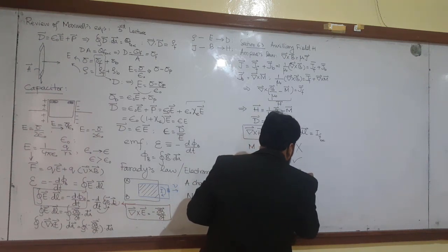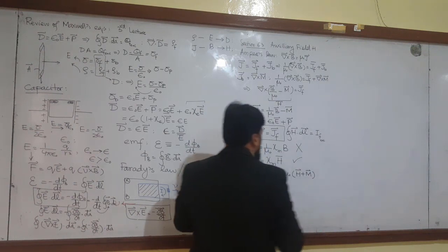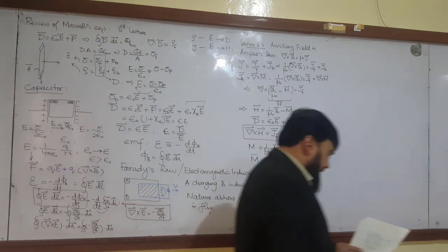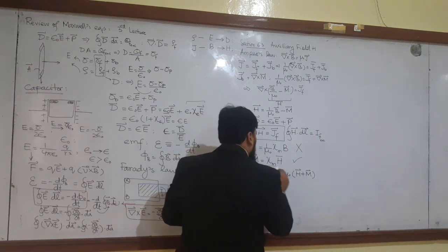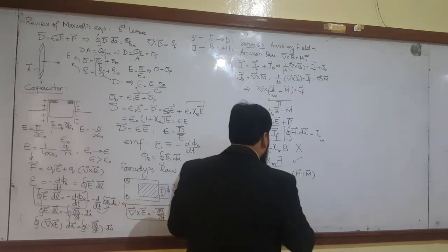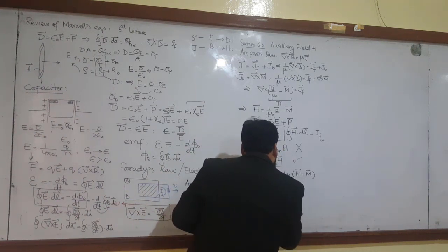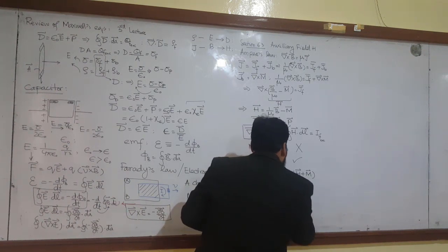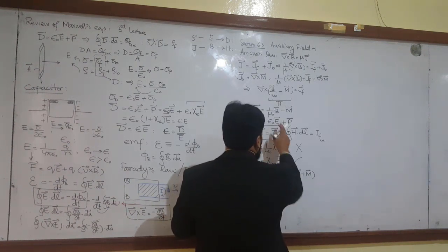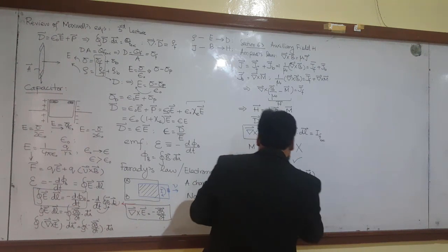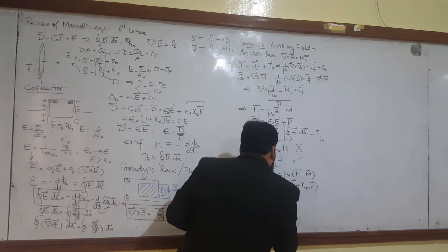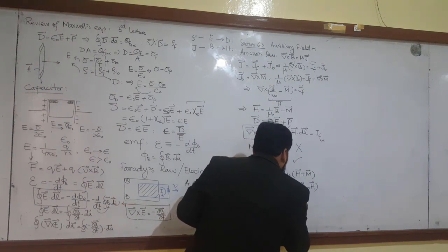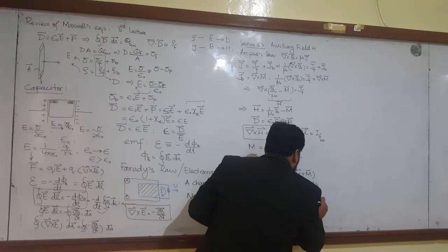So mu naught H plus M. And now, I came right that if I write M equal to chi M H, then this will be B equals mu naught and H here plus chi M H. And H will be taken as common, B equals mu naught, one plus chi M and H.